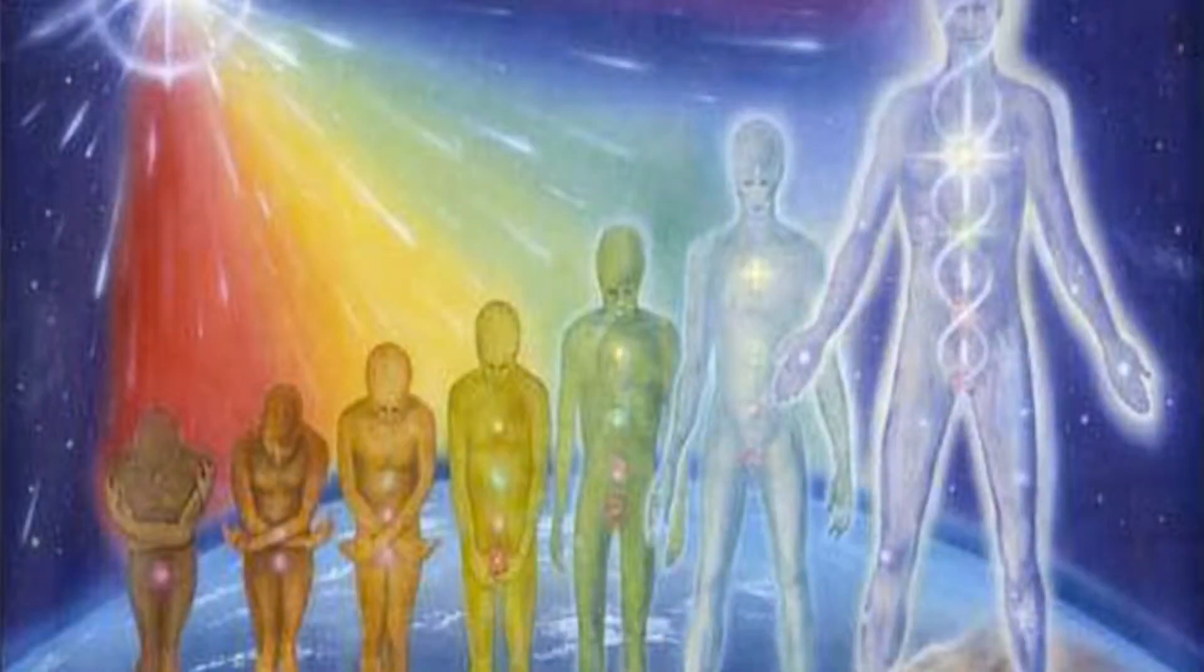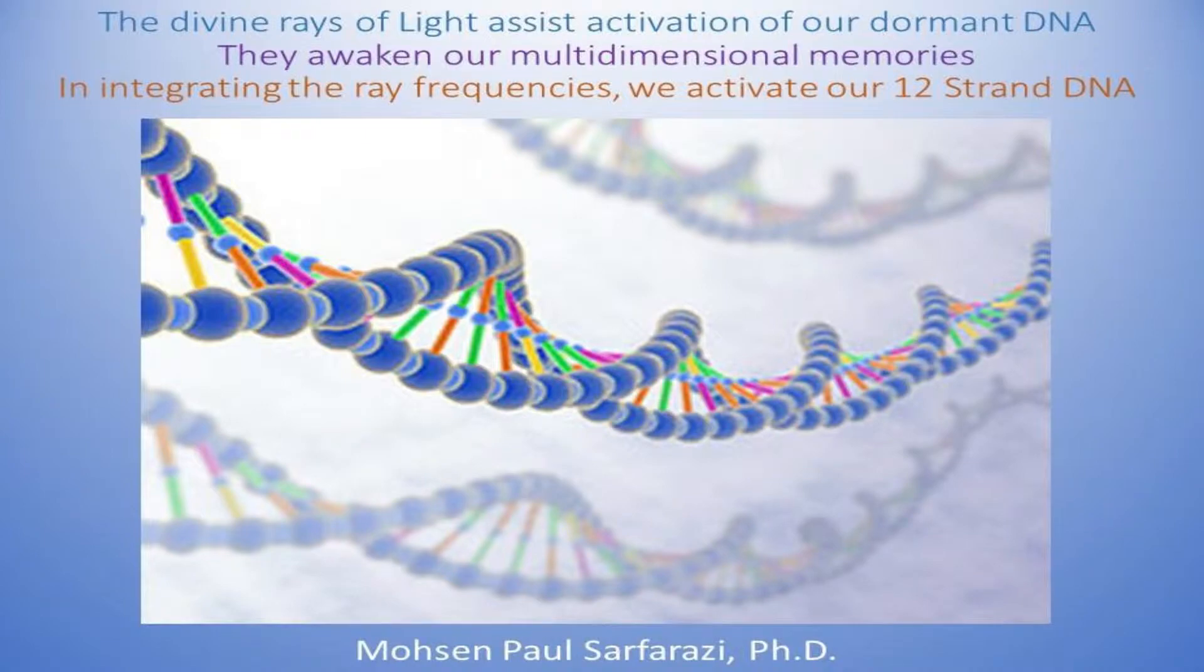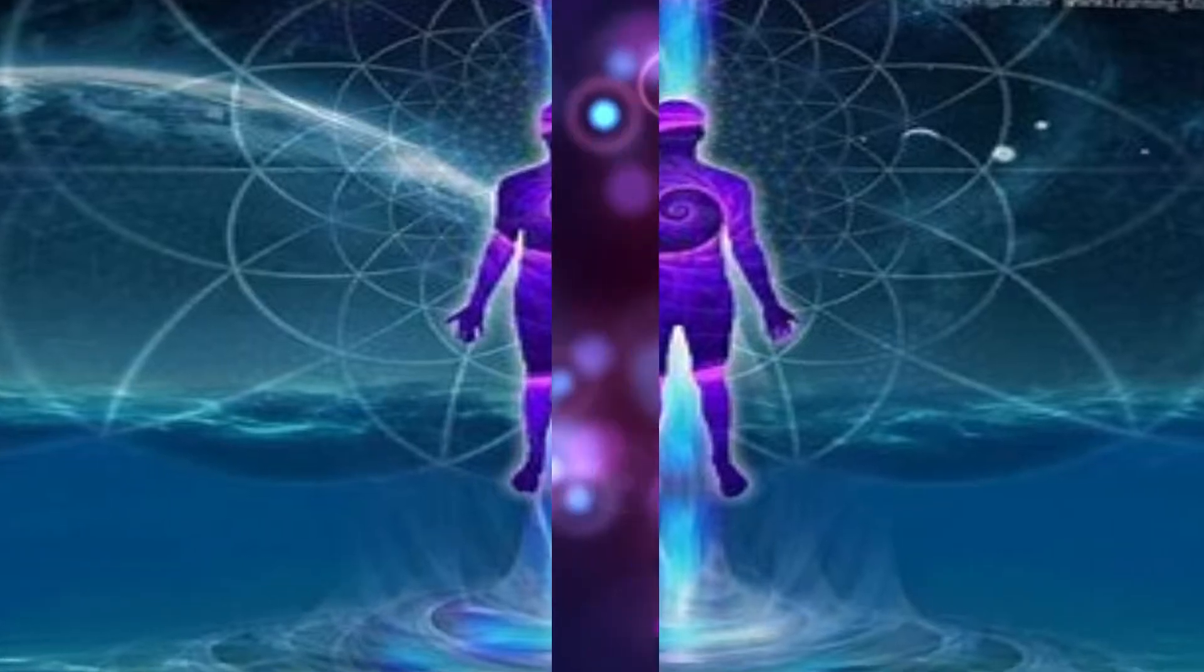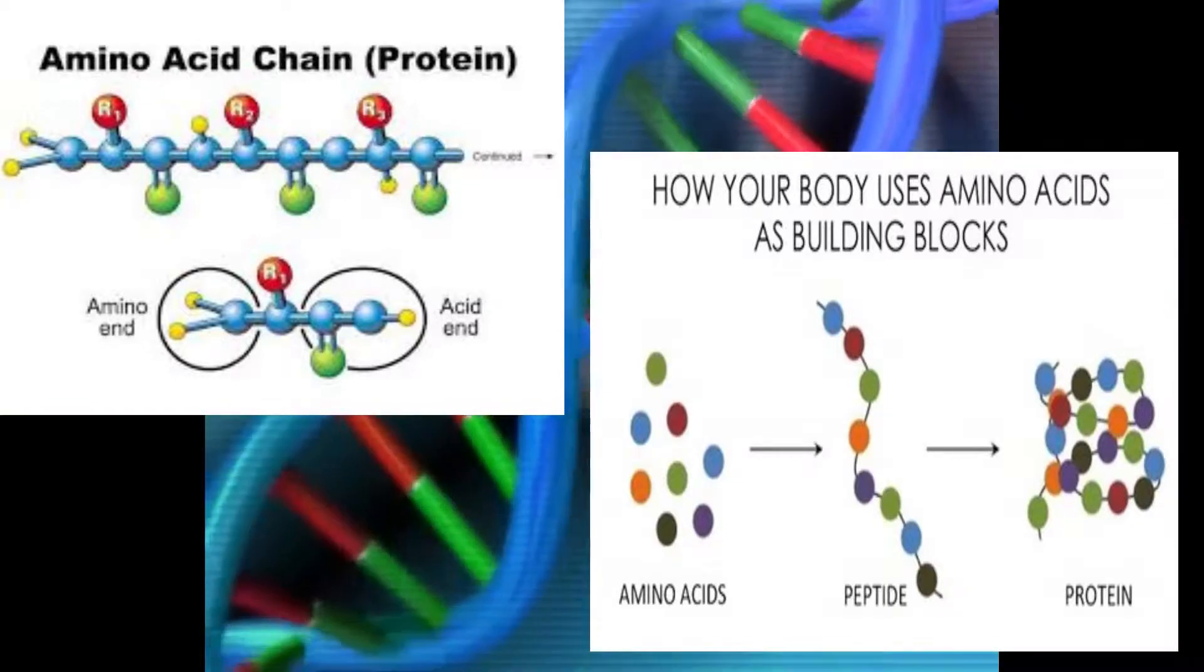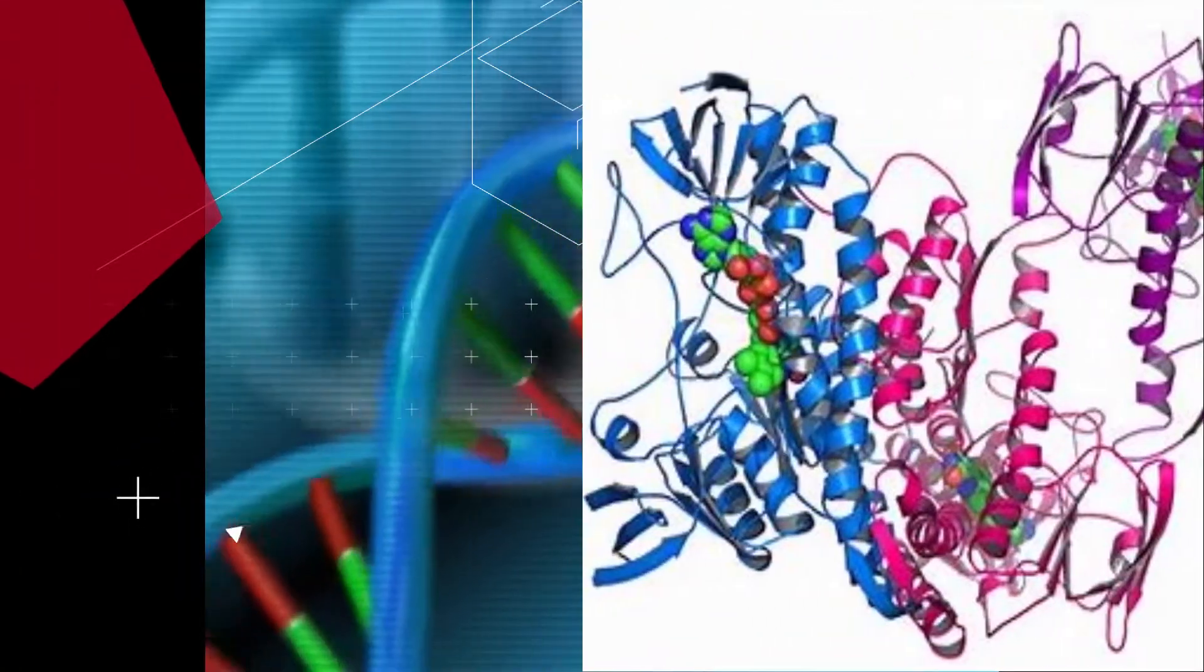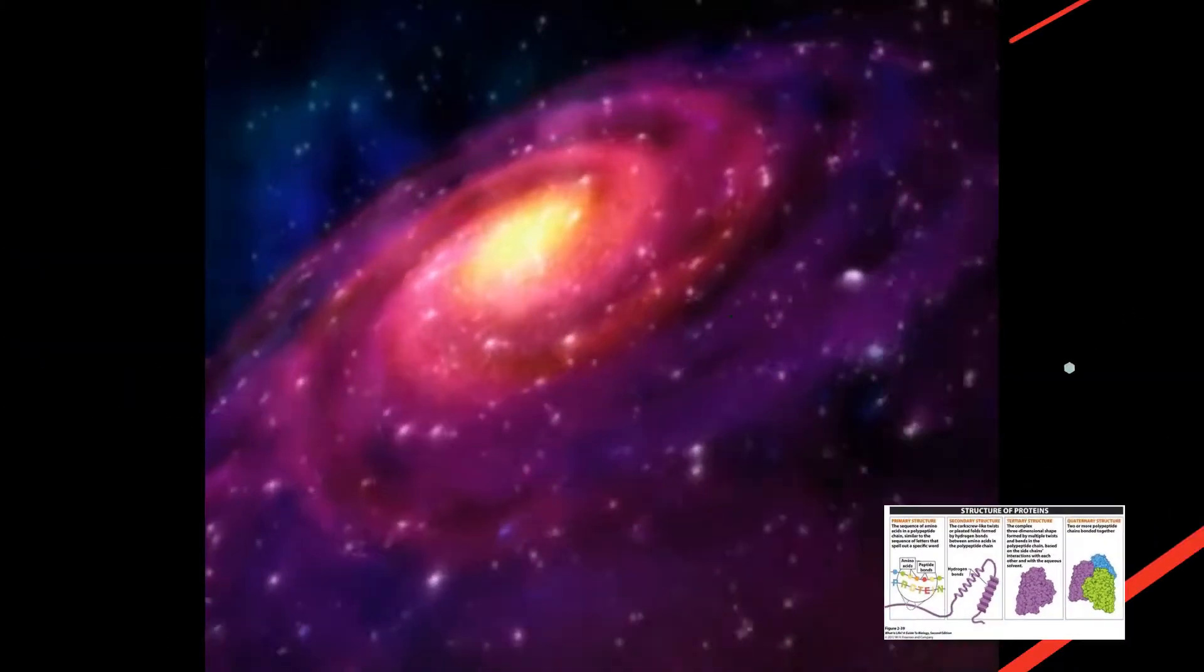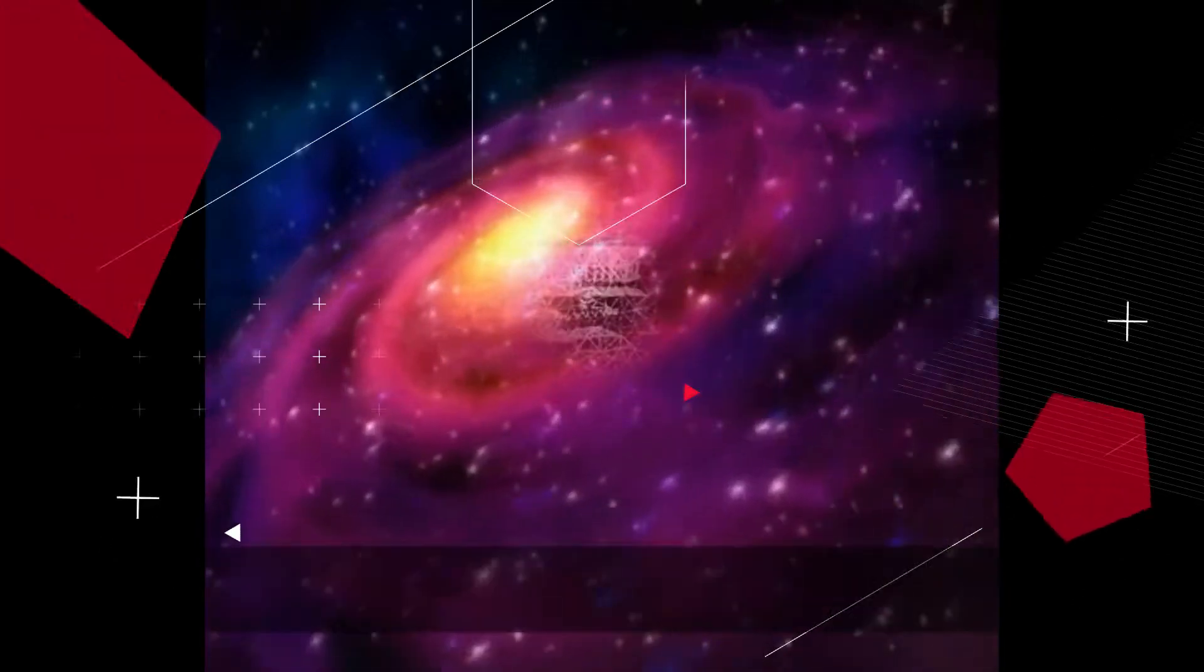The higher level of DNA becoming activated now through new protein coded genes is unprecedented on the earth plane. Proteins are assembled from amino acids by using information encoded in genes. Proteins perform a vast array of functions within our body including catalyzing metabolic reactions, DNA activation and replication, responding to stimuli and transporting molecules from one location to another.